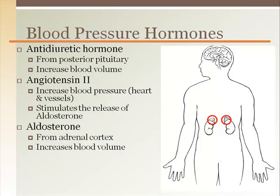Aldosterone increases blood volume by increasing the retention of sodium in the distal convoluted tubule, which results in less water being lost in the urine and more retained in the blood.